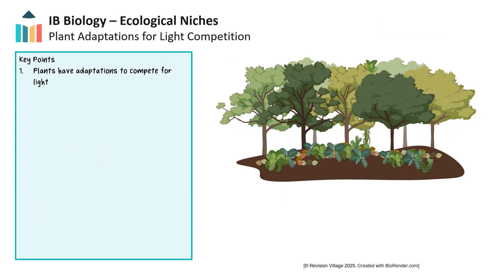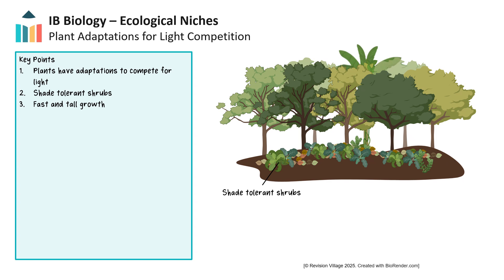Plants evolve not only to defend themselves from herbivores, but also to compete with other plants for resources. In tropical forests where water competition is minimal, the primary resource plants compete for is sunlight, leading to many different adaptive strategies. One strategy involves plants adapted to shade that grow on the forest floor and have broad leaves and dark pigments to capture more light. Other strategies include fast and tall growth to penetrate the tree canopy, requiring strong wood stems for support.